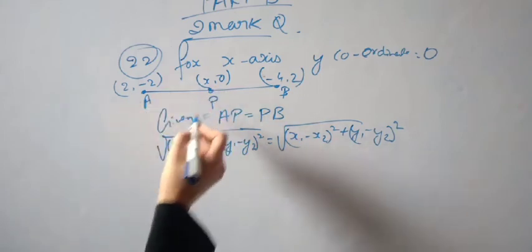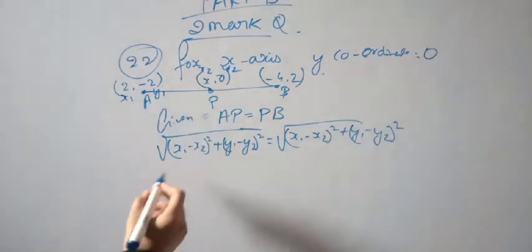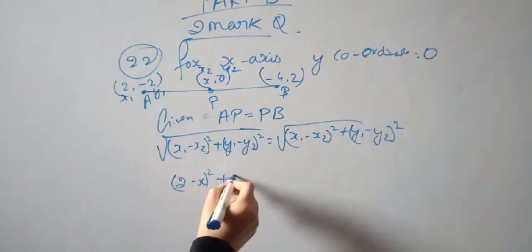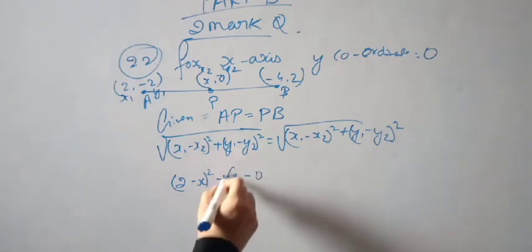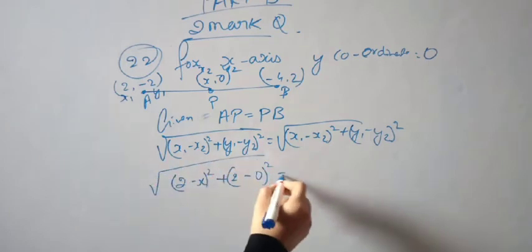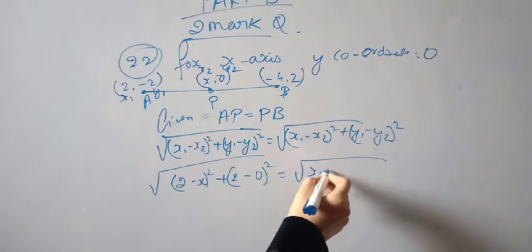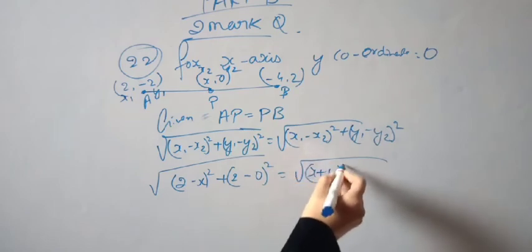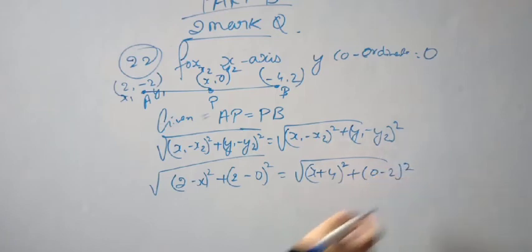Using the distance formula with x1, y1 and x2, y2: here x1 is x, y1 is 0, and A is (2, -2). So AP = sqrt((2 - x)² + (−2 − 0)²). Similarly for PB: x1 is x, x2 is -4, so x minus (-4) gives x plus 4, and y2 is 2. So PB = sqrt((x + 4)² + (0 - 2)²).